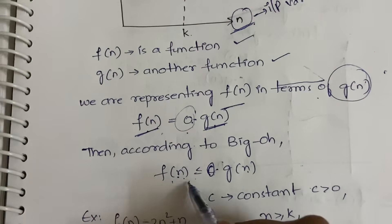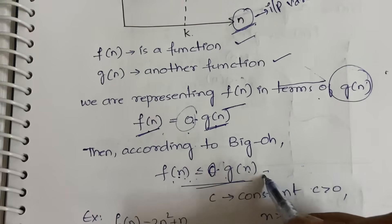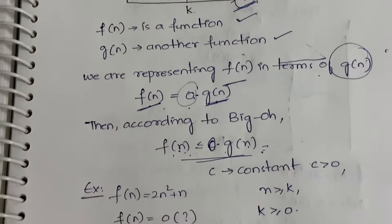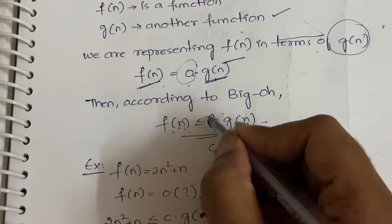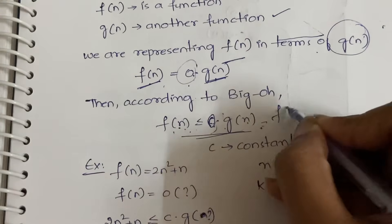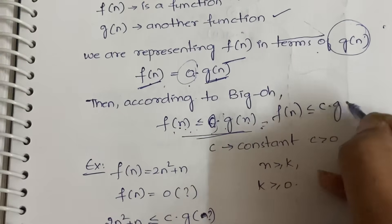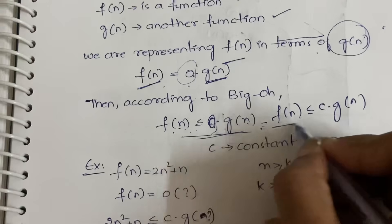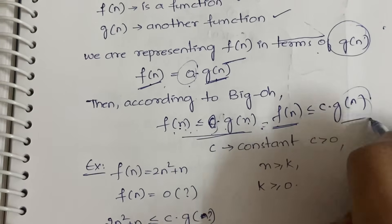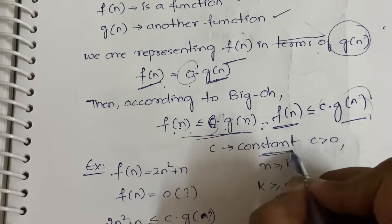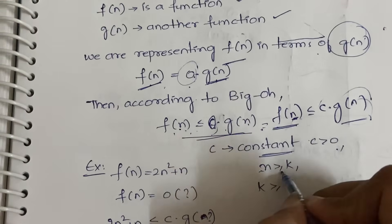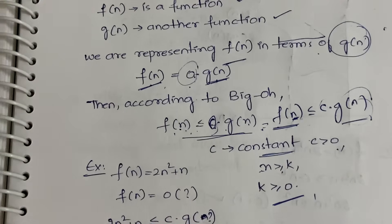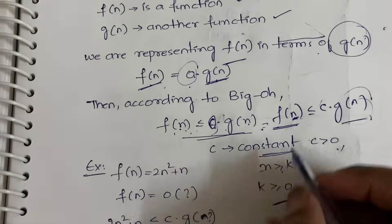According to Big O notation, f(n) ≤ O(g(n)). When you remove the O symbol, you get f(n) ≤ c · g(n), where c is a constant greater than 0, and n ≥ k, where k ≥ 0. You need to remember this general form for Big O.